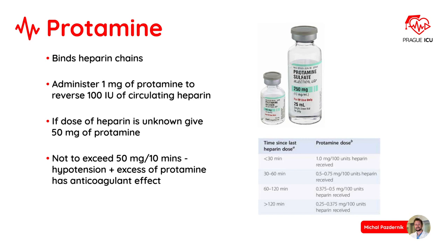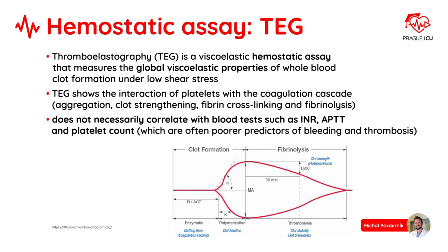The last part of this lecture is devoted to hemostatic assays. TEG is a viscoelastic hemostatic assay that measures the global viscoelastic properties of whole blood clot formation under low shear stress. TEG shows the interaction of platelets with the coagulation cascade. TEG doesn't necessarily correlate with blood tests such as INR, APTT, and platelet count. Here are some useful tips and tricks for interpretation of results.